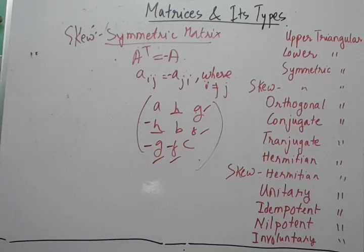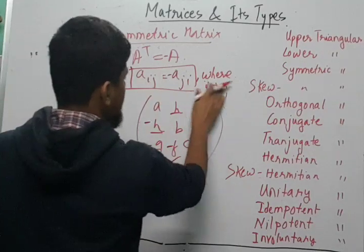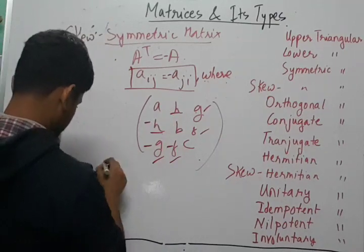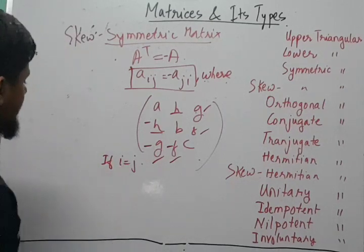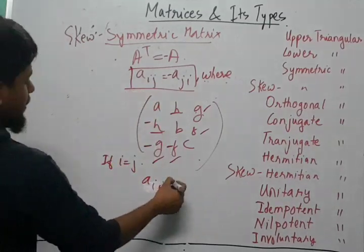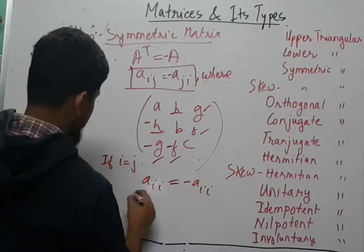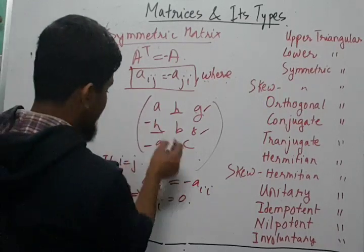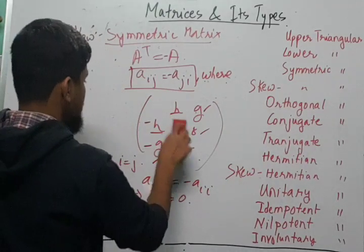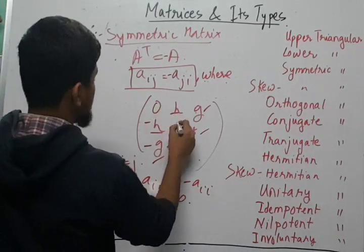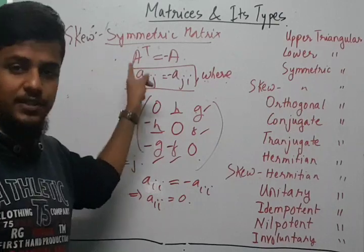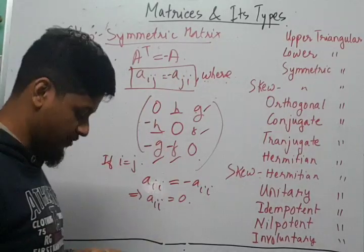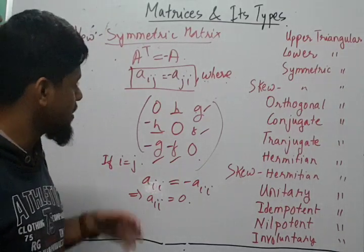Another key property: if we take i equal to j in the skew symmetric condition, then aᵢᵢ equals minus aᵢᵢ, which implies aᵢᵢ equals zero. So all the diagonal elements — the elements of the leading diagonal — will be zero in a skew symmetric matrix. The conditions are: A transpose equals minus A, and all leading diagonal elements equal zero.